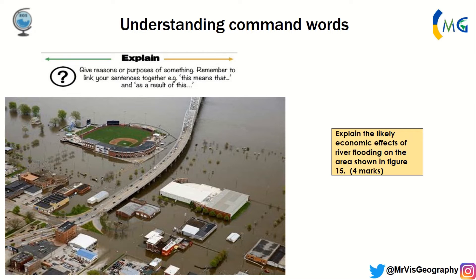Some businesses will be flooded — as a result, insurance claims will be made and insurance premiums might go up. You could say the baseball stadium is clearly not going to be usable that day, which is a loss of revenue for the club, meaning less money being spent in the local economy. Don't tell me things you can't see — make assumptions based on what you see. You could also say evacuation might be costly, so more money might have to be spent on emergency services.